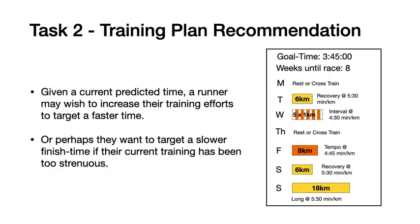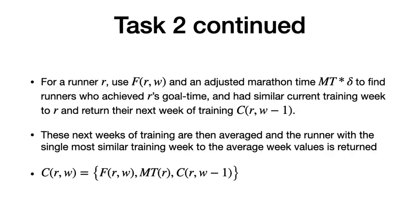Moving to the second task — training plan recommendation — we aim to recommend a week of training given a goal time and current point in training, including recovery runs, interval runs, tempo runs, with different distances and pacing recommendations. A runner might have received a predicted time slower than hoped and want to target a more ambitious goal time, or they may have trained hard already and wish to target a slower time with reduced training efforts.